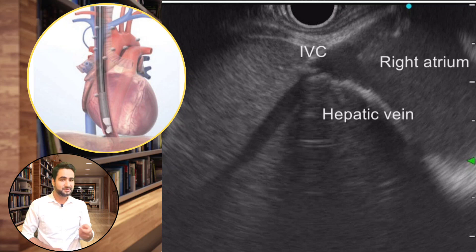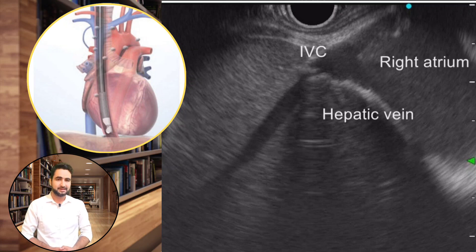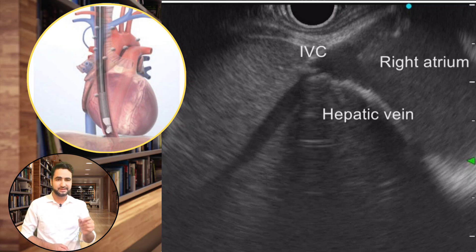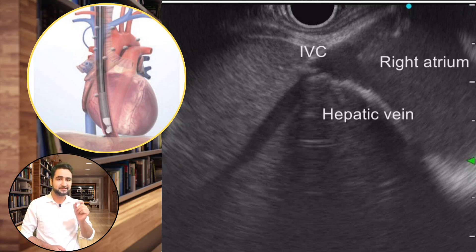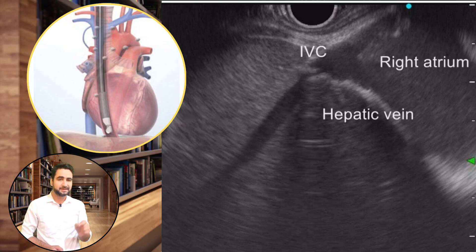Turn the scope counterclockwise to image the left hepatic lobe and left hepatic vein. This setup has also been discussed in my previous videos. You can now easily identify the left hepatic vein while slowly withdrawing the scope. You can follow the left hepatic vein entering into the inferior vena cava.